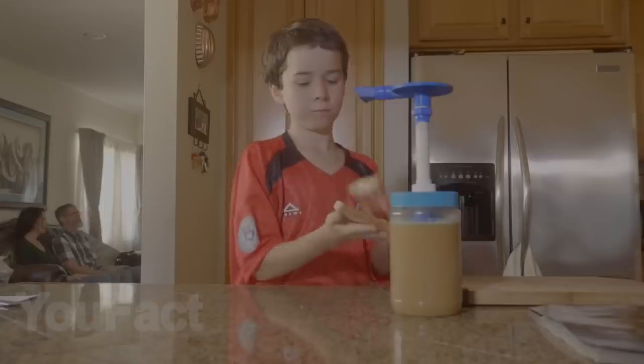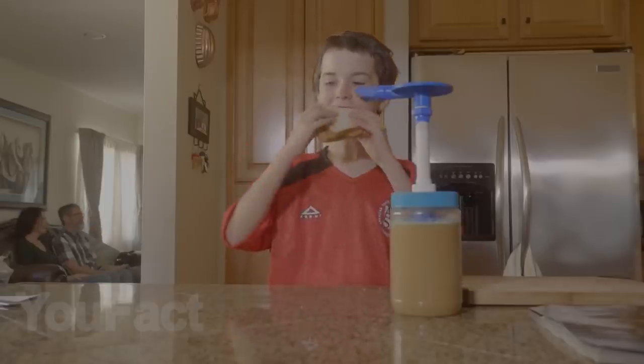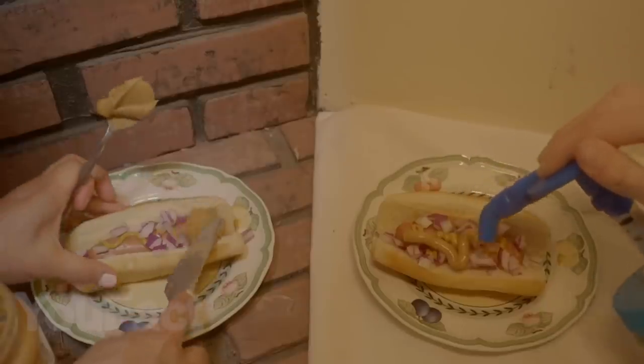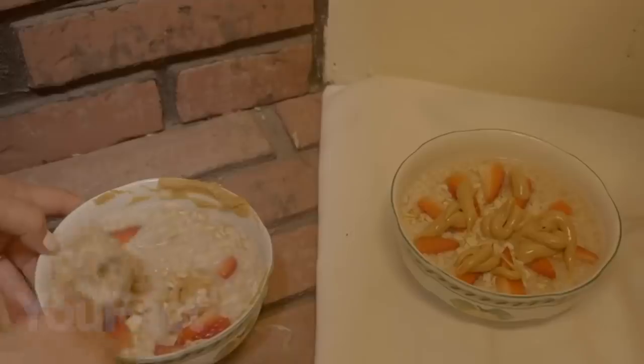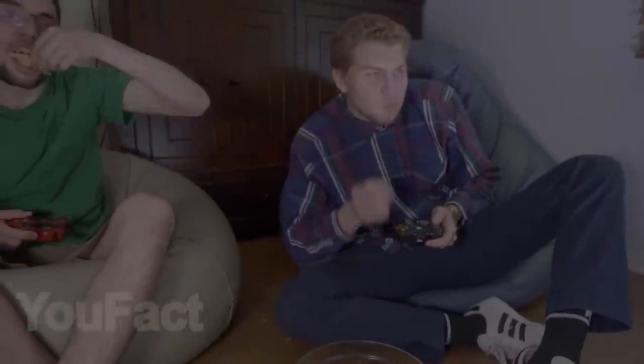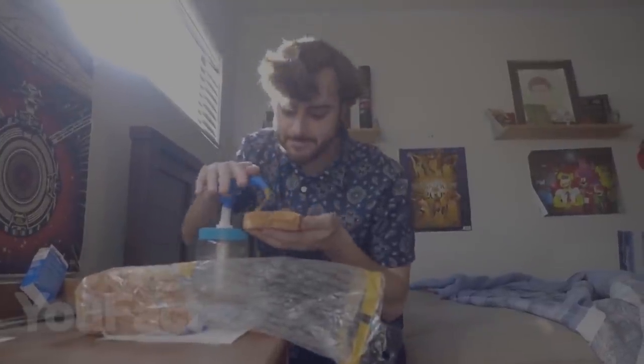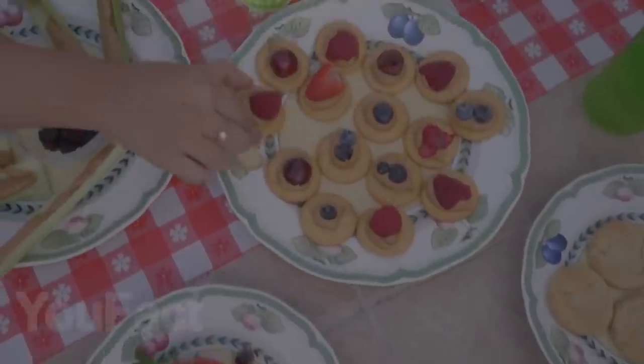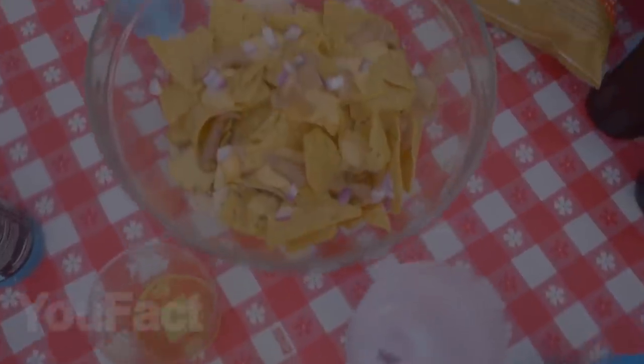The peanut butter pump is a great way to get the exact amount of peanut butter you need for sandwiches, smoothies, cookies, and hundreds more recipes without the hassle of cleaning spoons or measuring cups. Also, it cleans the jar so you don't have to. The peanut butter pump is made from food-grade, dishwasher-safe materials featuring easy disassembly for quick cleaning. It fits most standard 40-ounce jars and can be used with many different kinds of peanut butter.